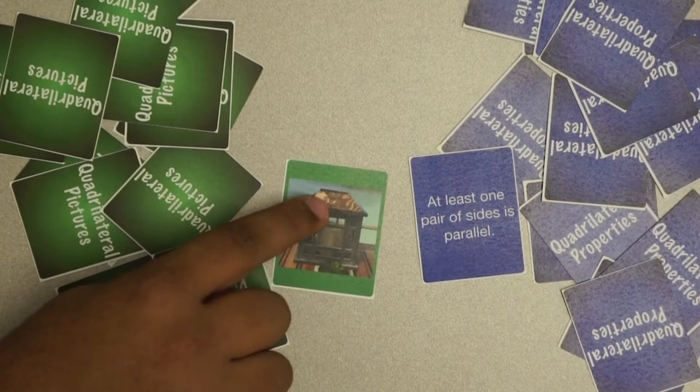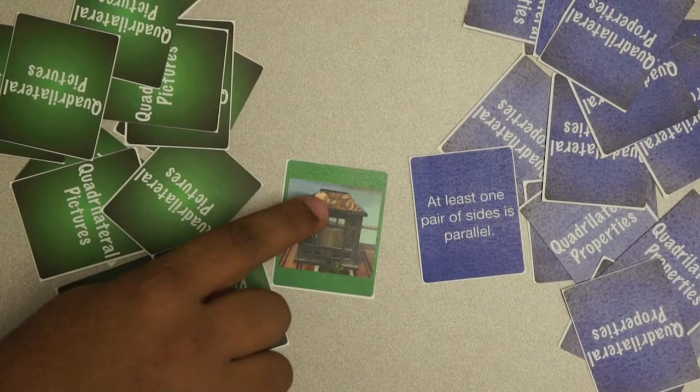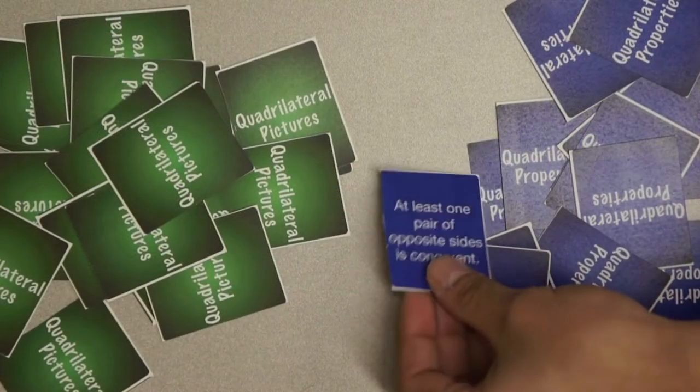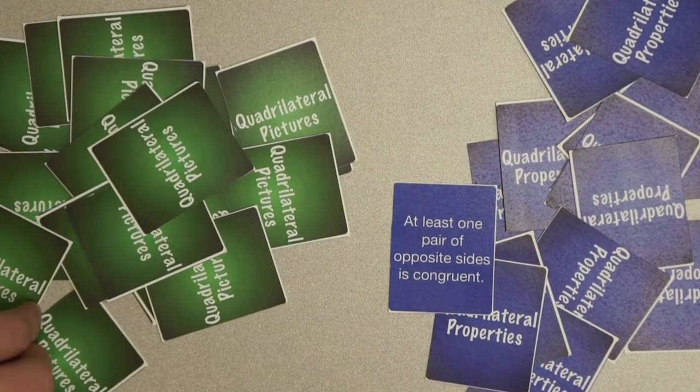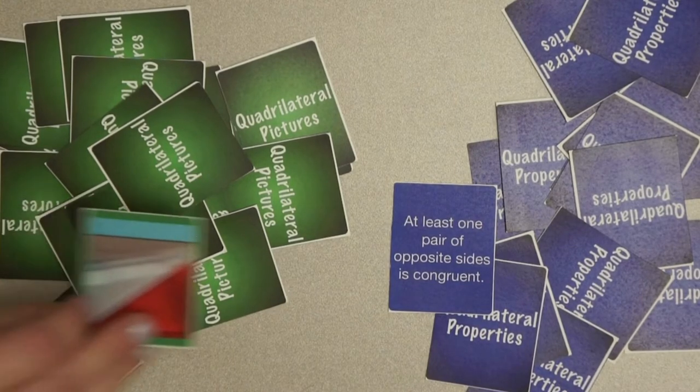If other players agree, you win the picture card. Return the property card face down to its pile. If no players believe the cards match, a new quadrilateral property or picture card will be flipped over by the next player.